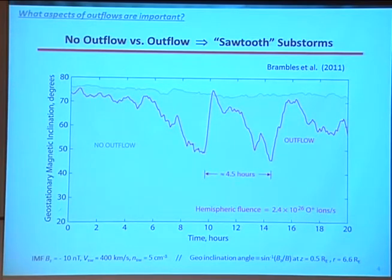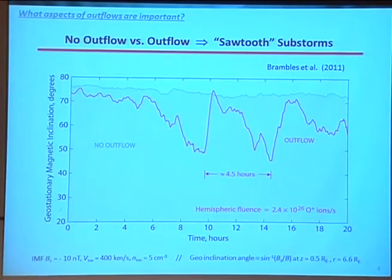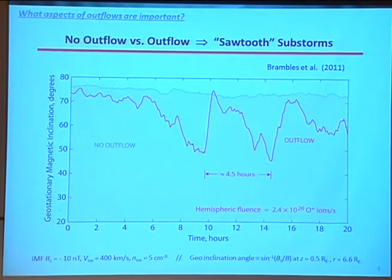The zeroth-order aspect is outflow or no outflow. One of the things we found recently is that if you don't include outflows in global magnetospheric simulations, you don't get sawtooth oscillations — periodic substorms — in those simulations. When you do include outflows for steady solar wind conditions, the system starts ringing with a period of two to five hours. There's also an omission on my impacts chart: the plasmasphere. Another zeroth-order effect of outflows is there's no plasmasphere without outflows. There might be co-rotation, but you're not going to fill the plasmasphere if you don't have outflows.